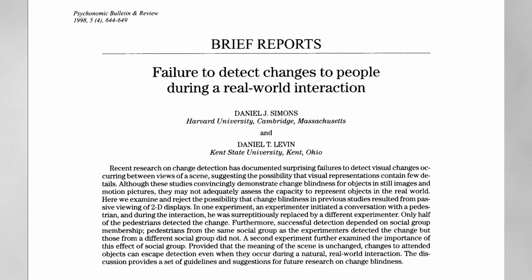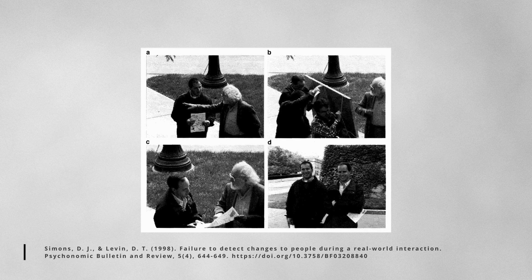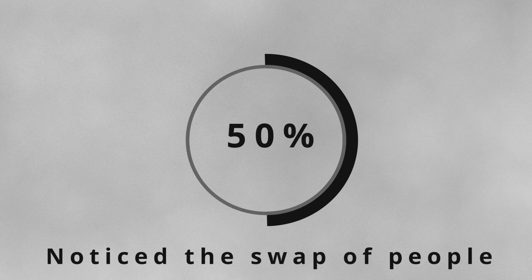I used change blindness in the ball animation as well — that's why you might have missed that some objects changed shape or color, a total of five times. A famous example is the door study by Daniel Simmons and Daniel Levin. A pedestrian is asked by a researcher for directions. Then two people walking with a door separate the pedestrian and the experimenter, and the experimenter is swapped for a different person. Surprisingly, only 50% of pedestrians noticed the change.